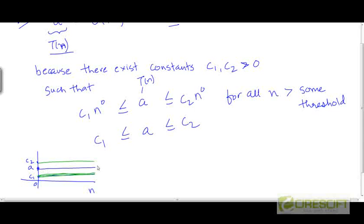So this is the curve. T of n is the curve. This is the curve c2 times n to the power 0 and this is the curve c1 times n to the power 0. So T of n can be sandwiched between two constant multiples of n to the power 0.